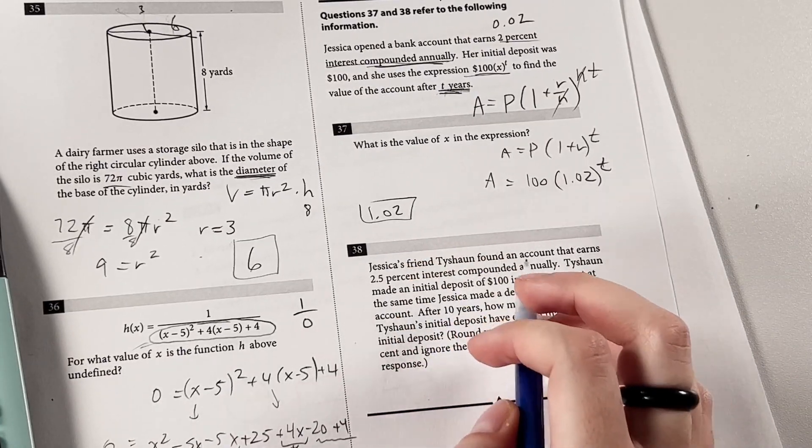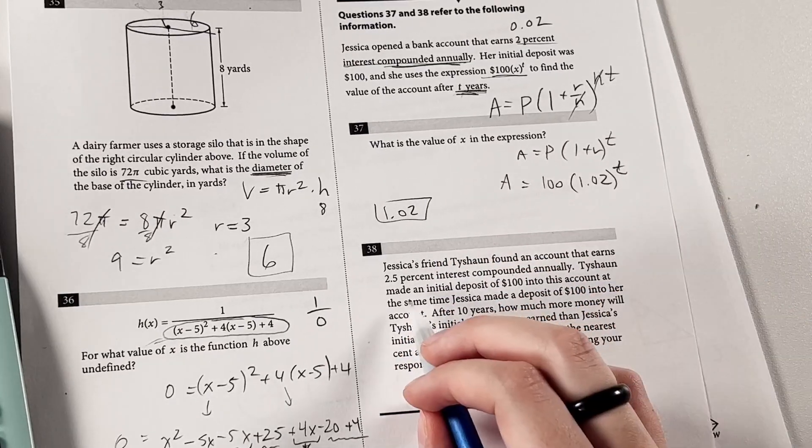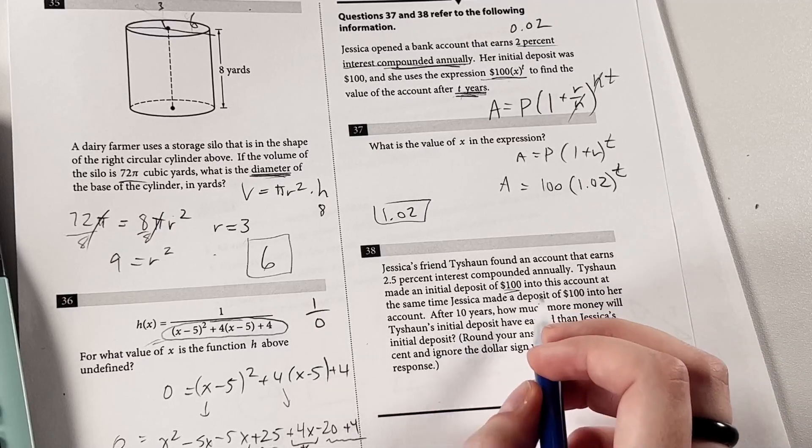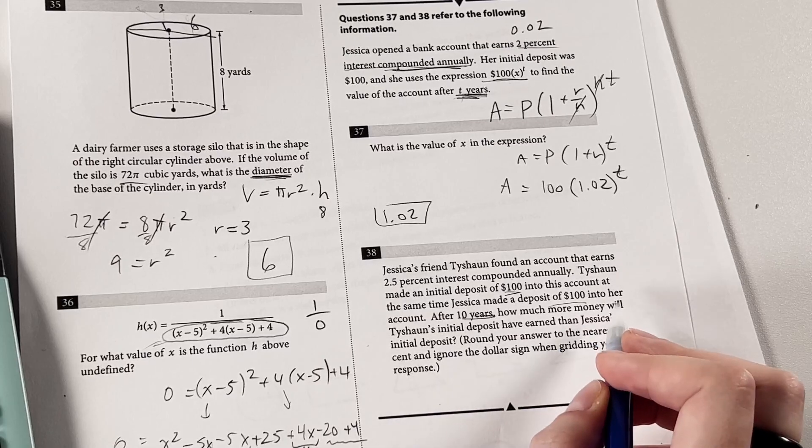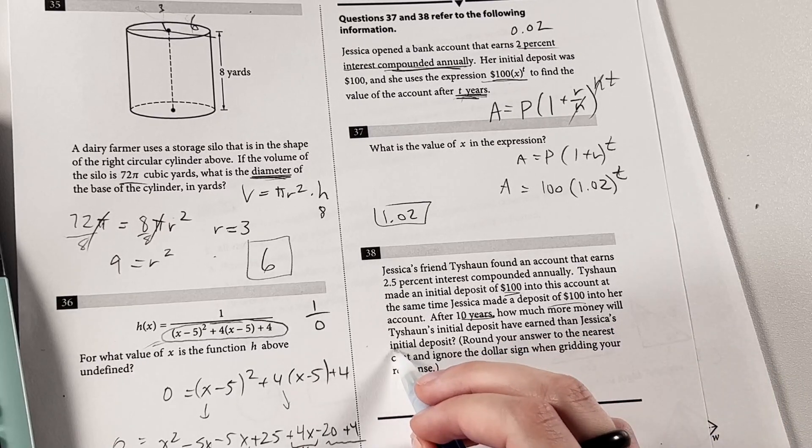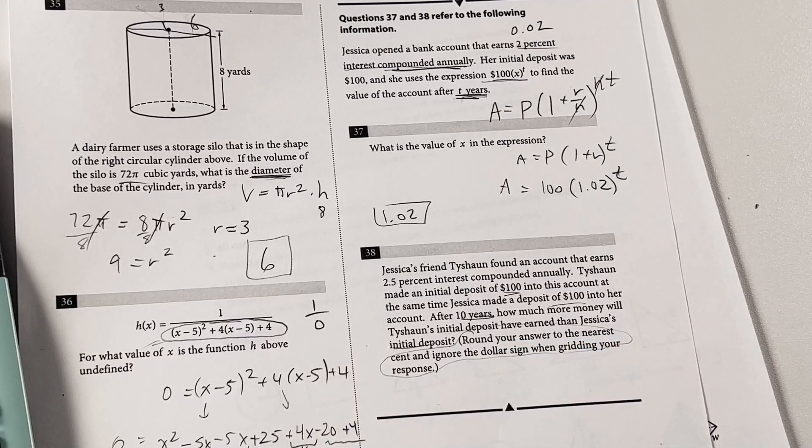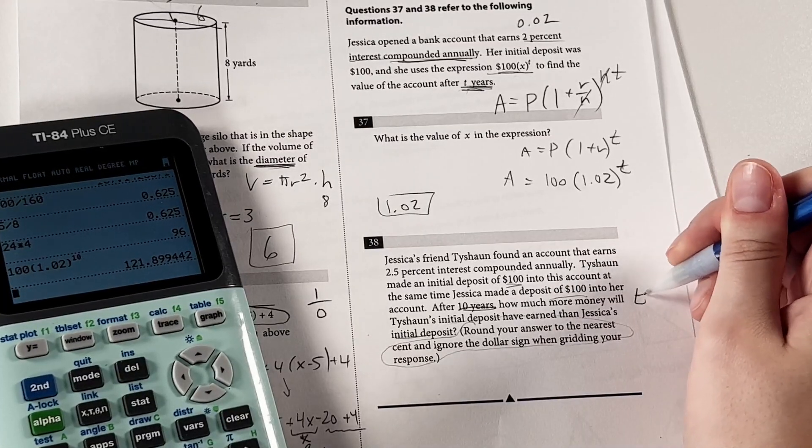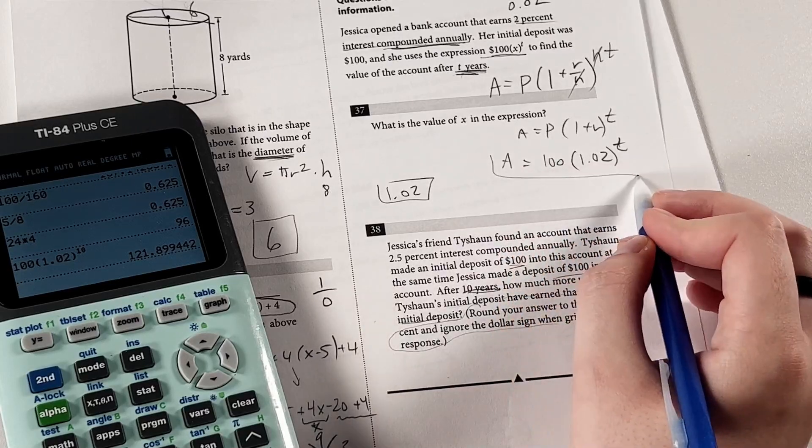Now we have that Jessica's friend Tashan found an account that earns 2.5% interest compounded annually. He made an initial deposit of $100 into this account the same time that Jessica made her deposit of $100 into her account. After 10 years, how much more money will Tashan's initial deposit have earned than Jessica's initial deposit? And this is just directions on rounding and writing in your answer. Okay, so kind of glad we did this because we kind of saved ourselves a step here. 10 years is our value of t for both accounts, and Jessica's equation looks like this.